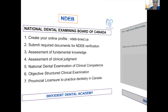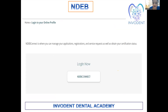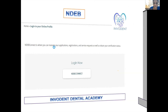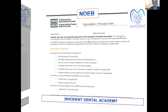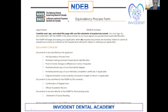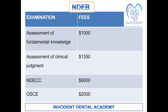For NDEB connect, you have to prepare your profile, and through the equivalency process form, you have to submit all your documents for verification. Once your documents are verified, you are all set to give your applications for the respective examinations. These are the phases for each exam: Assessment of Fundamental Knowledge, Assessment of Clinical Judgment, Clinical Competence, and Objective Structured Clinical Examination.